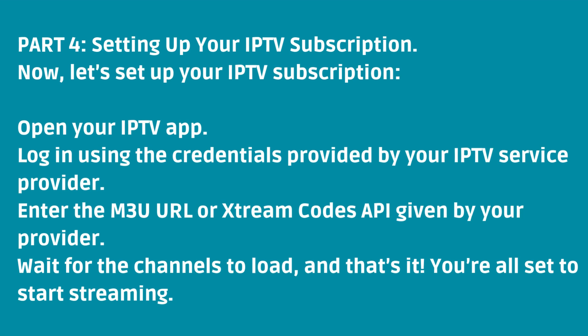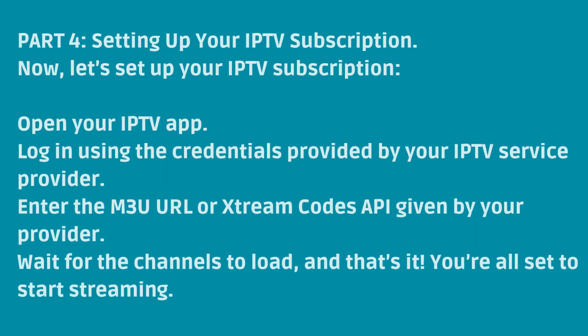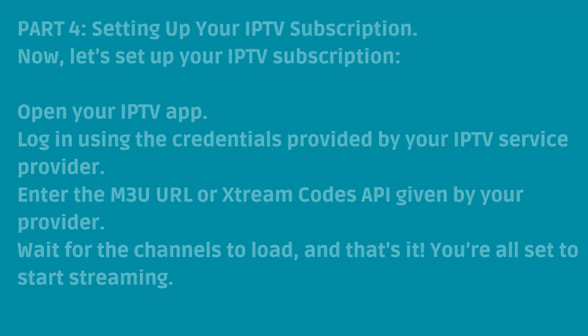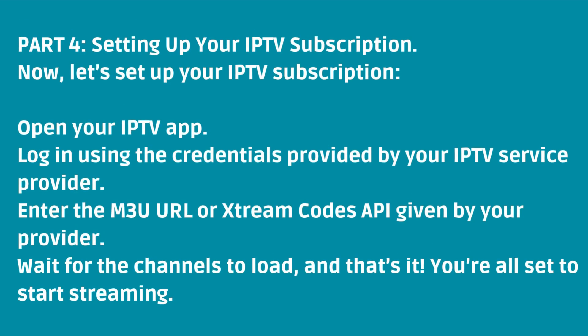Part 4: Setting up your IPTV subscription. Open your IPTV app and log in using the credentials provided by your IPTV service provider. Enter the M3U URL or XtreamCodes API given by your provider, then wait for the channels to load. And that's it — you're all set to start streaming.